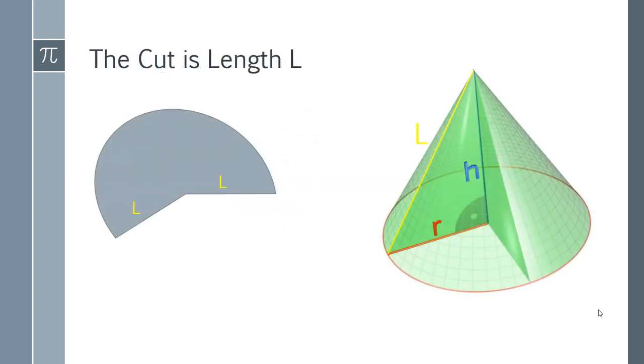And when you unroll it and you cut it out, you're going to get a segment of a circle. So you're going to get this shape here. And there's some more geometry. That cut length is going to be L. So you cut along L, and so obviously that's going to be L. You can mark that on the diagram nice and simply there.